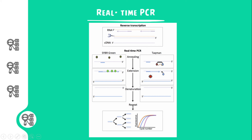As the reaction proceeds, the molecules bound are released so as to obtain a fluorescence signal, which is then recorded in each cycle. This is then graphed taking cycle number on the x-axis and fluorescence on the y-axis.